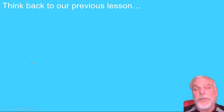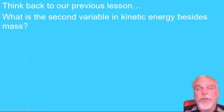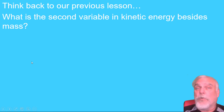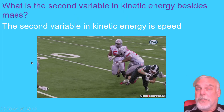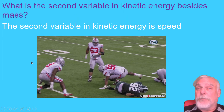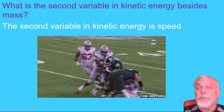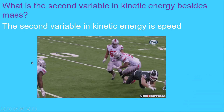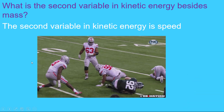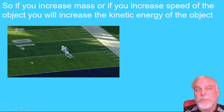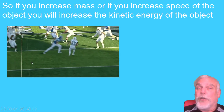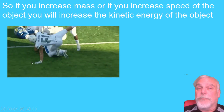Now let's think back to our kinetic energy lesson. What is the second variable in kinetic energy? We have the first one — that's mass. The second variable is the speed that the object is traveling. The greater the speed, the greater the kinetic energy.